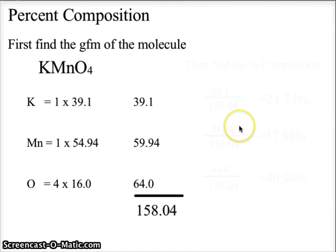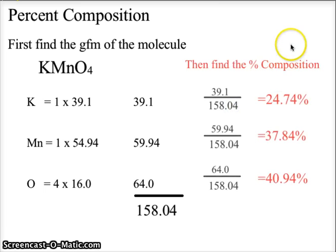Now, to find the percent composition, we're looking for what part of the total molecule is made up by each individual element. So what we'll do in this case is find the percent composition by taking the mass of each element and dividing it by the gram formula mass of the total molecule. We're going to take the 39.1, the mass for the potassium, divided by the 158.04, the total mass of the potassium permanganate, giving us a 24.74 percent composition of potassium in the molecule.